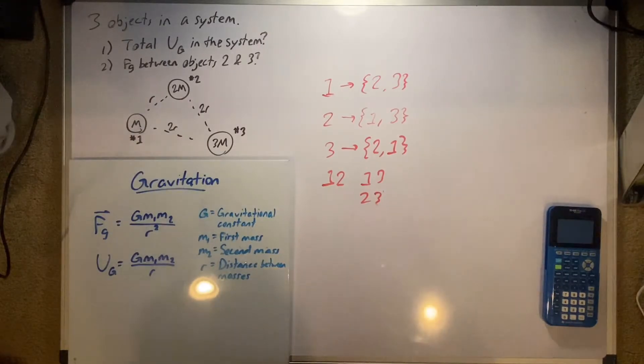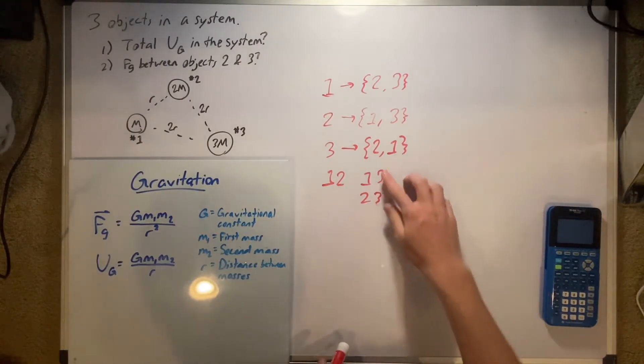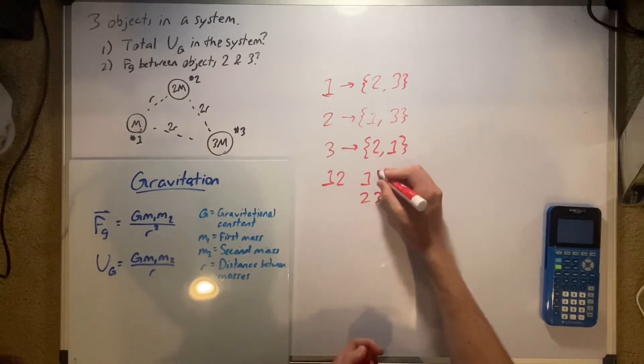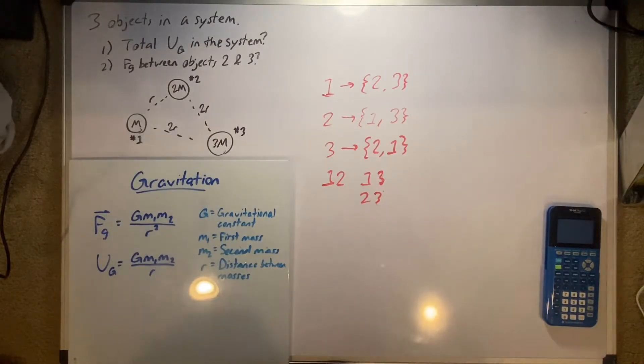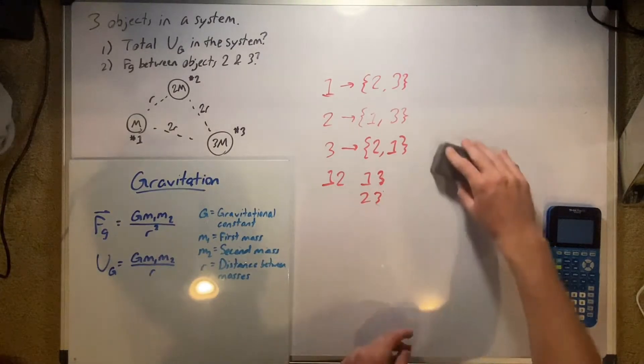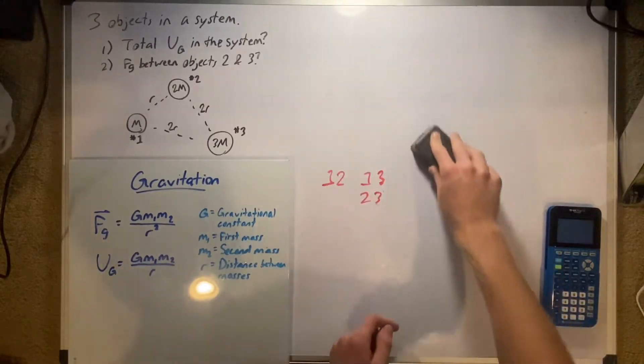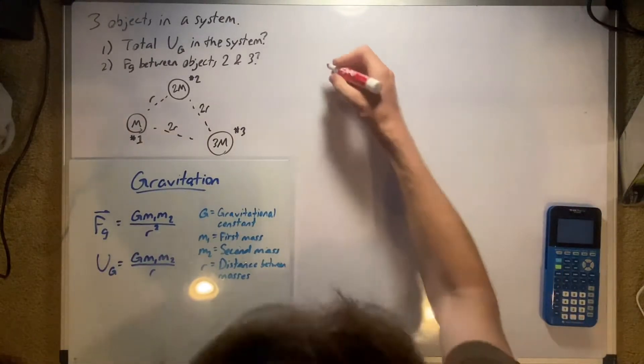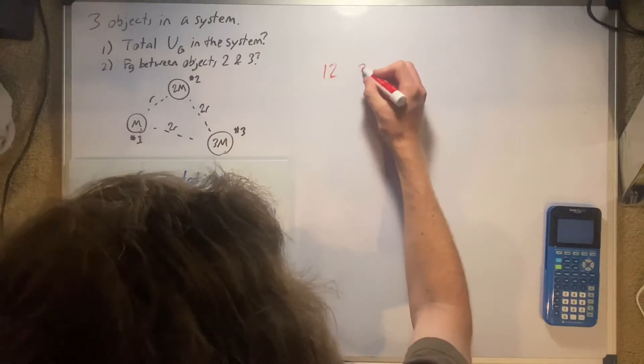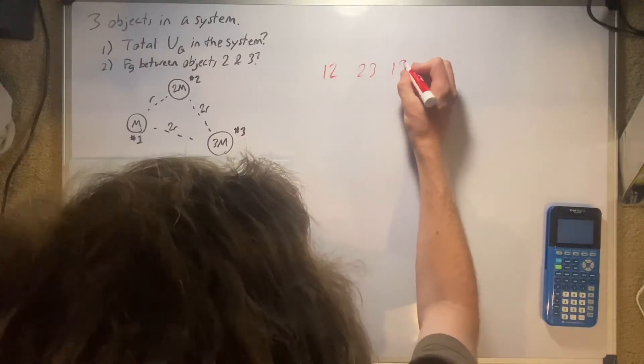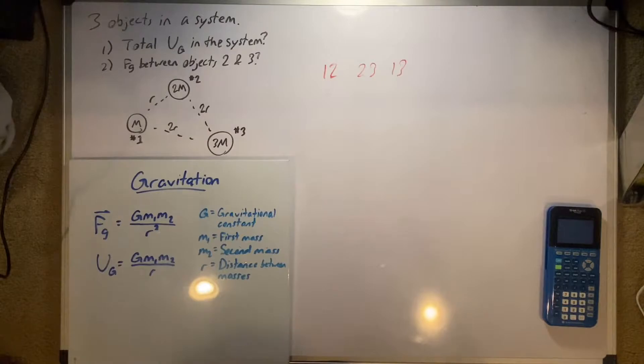One can interact with two and three, and then obviously two and three. Of course, you could have just looked at that yourself, but when you start getting into more than just three, it's better to just make these pairs. So now that we've made these pairs, we know what can interact with what. One and two, two and three, one and three, and I'm going to use these three numbers to represent that.